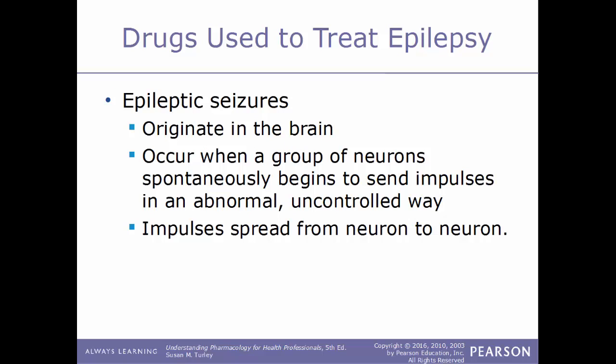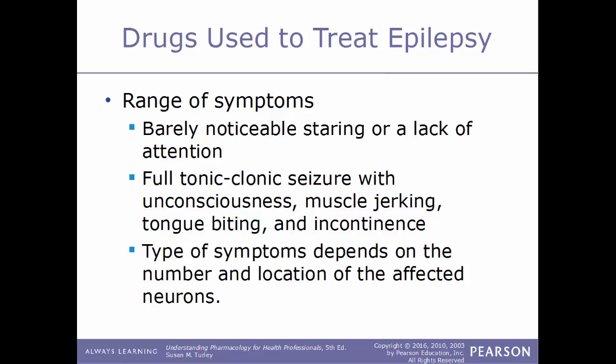First, we'll start off with drugs that are used to treat epilepsy. Epileptic seizures originate in the brain and occur when a group of neurons spontaneously begin to send impulses in a very abnormal, uncontrolled manner. These impulses spread from neuron to neuron. There's a range of symptoms: a barely noticeable staring or lack of attention, or a full tonic-clonic seizure with unconsciousness, muscle jerking, tongue biting, and incontinence. The type of symptoms depends on the number and location of the affected neurons.